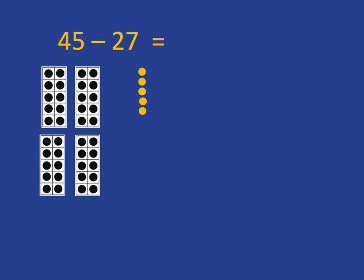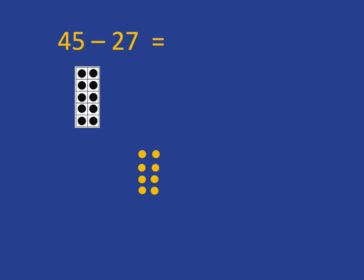So what we need to do, and this is the important bit, we need to use the fact that we can exchange a 10 frame for 10 ones. So we can exchange that 10 frame for 10 counters because they're exactly the same value. Now we can take away seven ones. We can take away those five and two more, so we've taken away seven ones, and we're left with eight ones. We then need to take away the two tens, and we see that we are left with one ten and eight ones, which is 18.